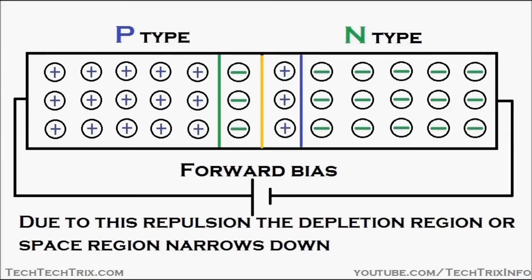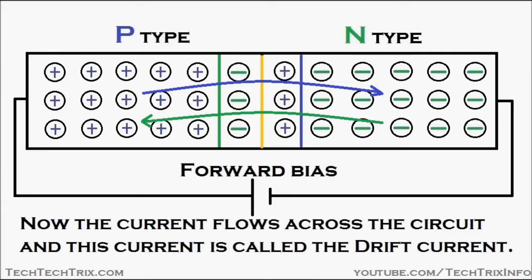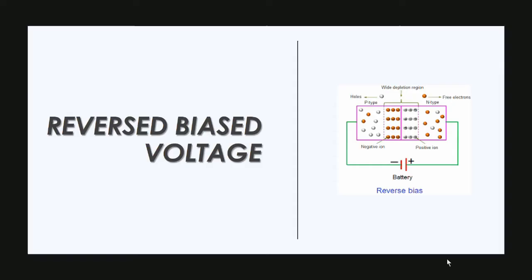Due to this repulsion, the depletion region or space charge region narrows down, as you can see in the animation. If the voltage in the forward bias is above a specified range, the electrons in the N region drift through the junction and migrate to the P region, and the holes in the P region drift through the junction and migrate towards the N region. The current starts to flow across the circuit and this current is called the drift current.